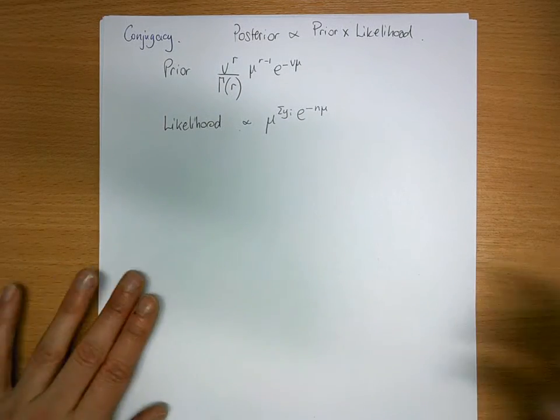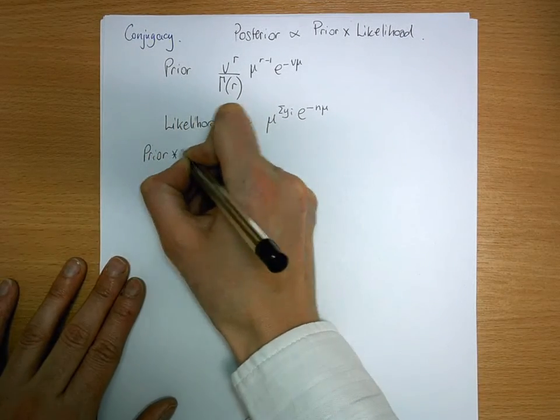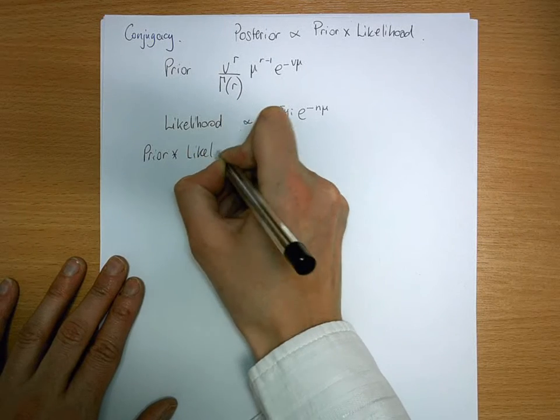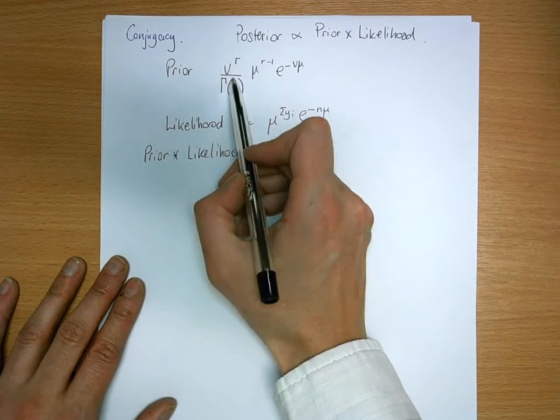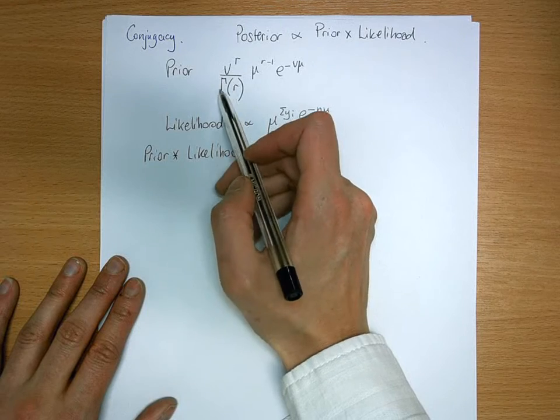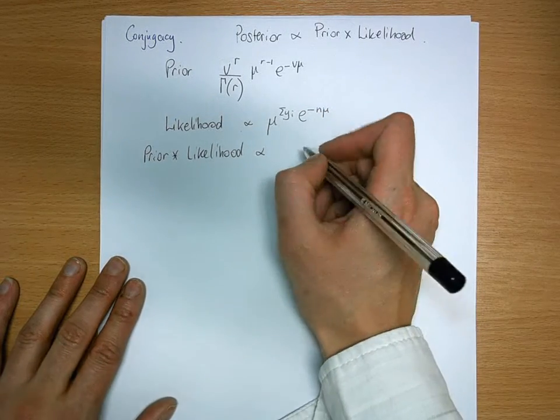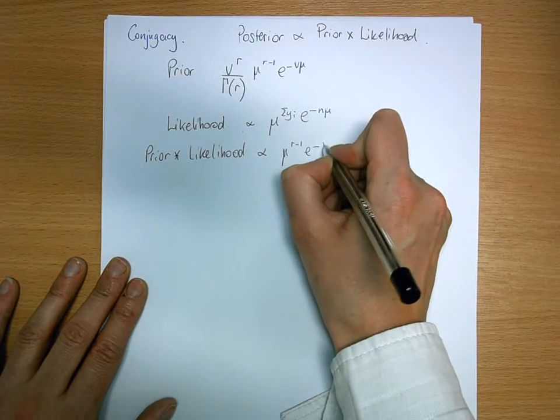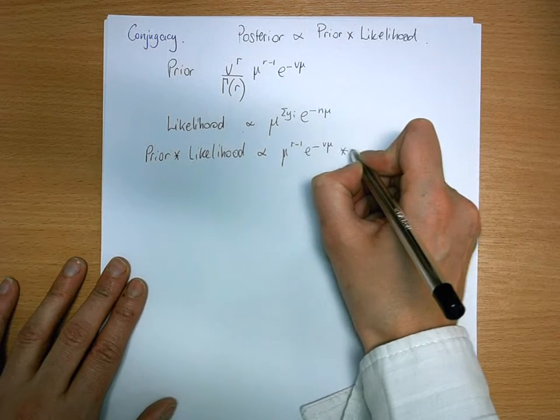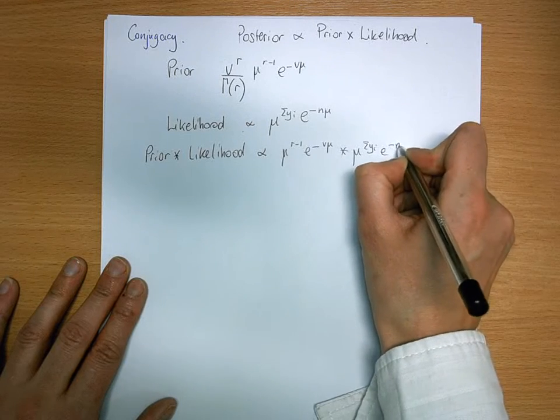So if you multiply the two together, we get our prior times likelihood. It's proportional to—all this bit here is a constant, so I'm not going to bother writing it down again—mu to the r minus 1, e to the minus v mu, times mu to the sum of yi, e to the minus n mu.